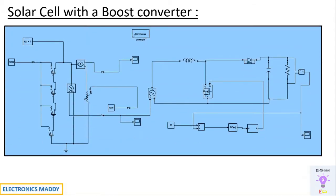This is the MATLAB model of a solar cell interfaced with a boost converter. We basically have four solar cells connected in series, each with a value of 3 volts, so 3+3+3+3 gives 12 volts at the output terminals. This 12 volts is given as input to a boost converter, which increases the DC voltage to a higher value — in this case, 12 volts is increased to 60 volts. The circuit is designed to operate in closed-loop mode.